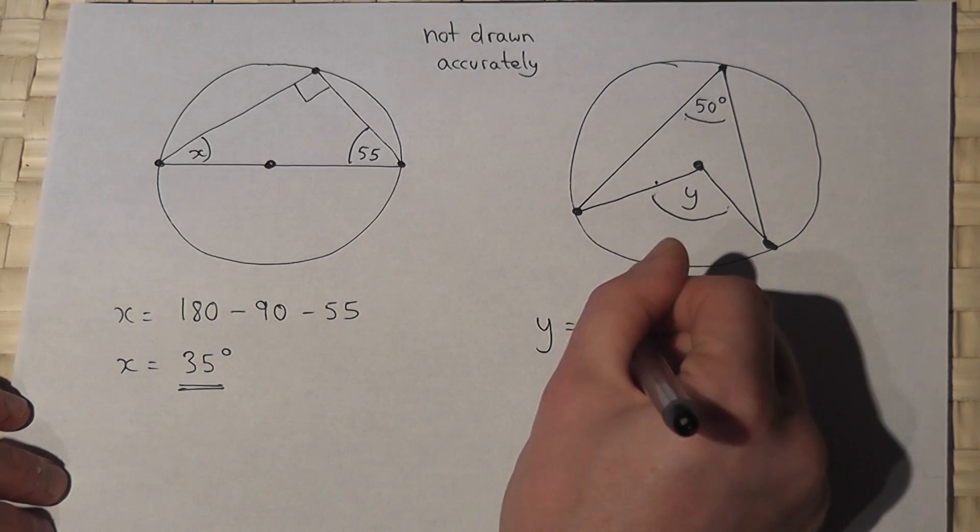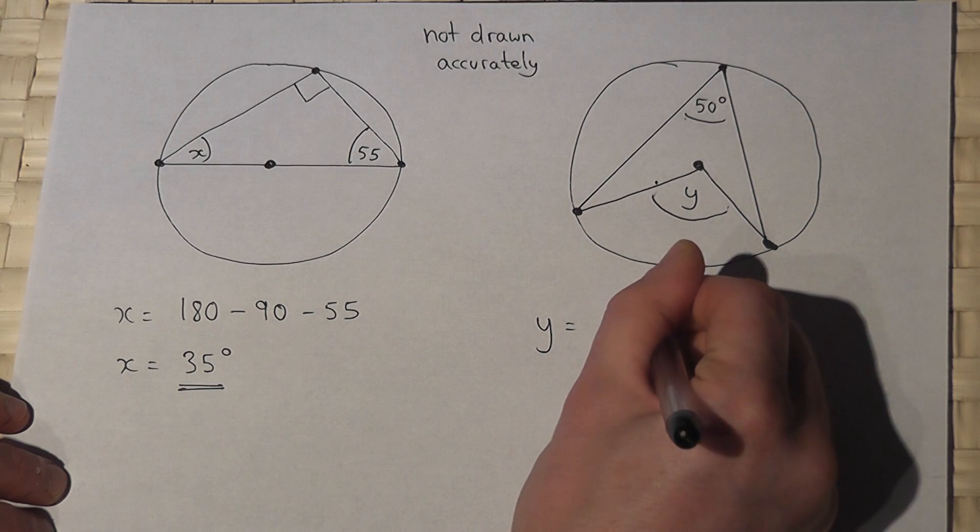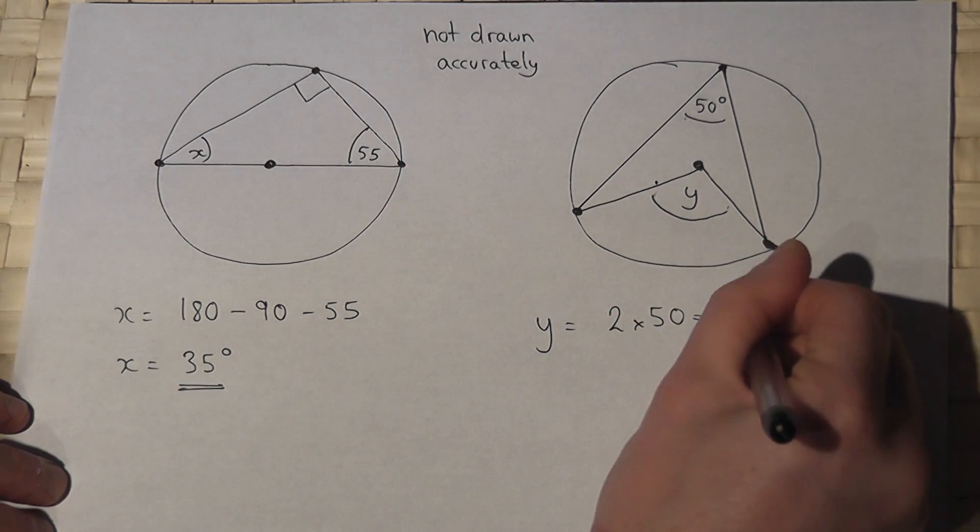So y will equal 2 lots of 50, which is 100 degrees.